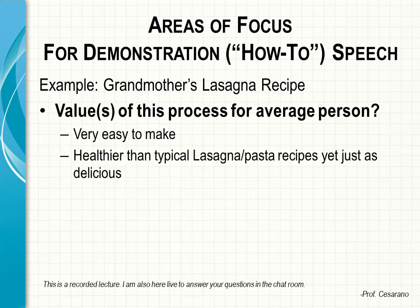Here is an example of how your process might fit under multiple areas of focus and how you should choose one based upon the best value of the process to your audience. Let's imagine that a student preparing his demonstration or how-to speech decides after brainstorming to use the process of making his grandmother's lasagna recipe, which he has known how to make since he was about ten years old. Before he can decide which area of focus to use, he must figure out what specifically the value of this process might be for the average person in his audience.